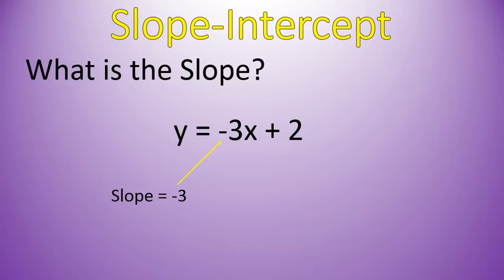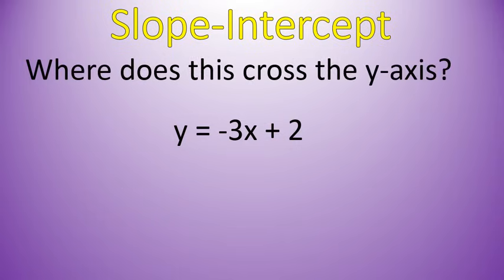Every single time, the number in front of x is your slope, the number by itself off to the side here is your y-intercept. If you have the equation arranged like this, y by itself on the left, and something times x plus another number, that's the information you've got.